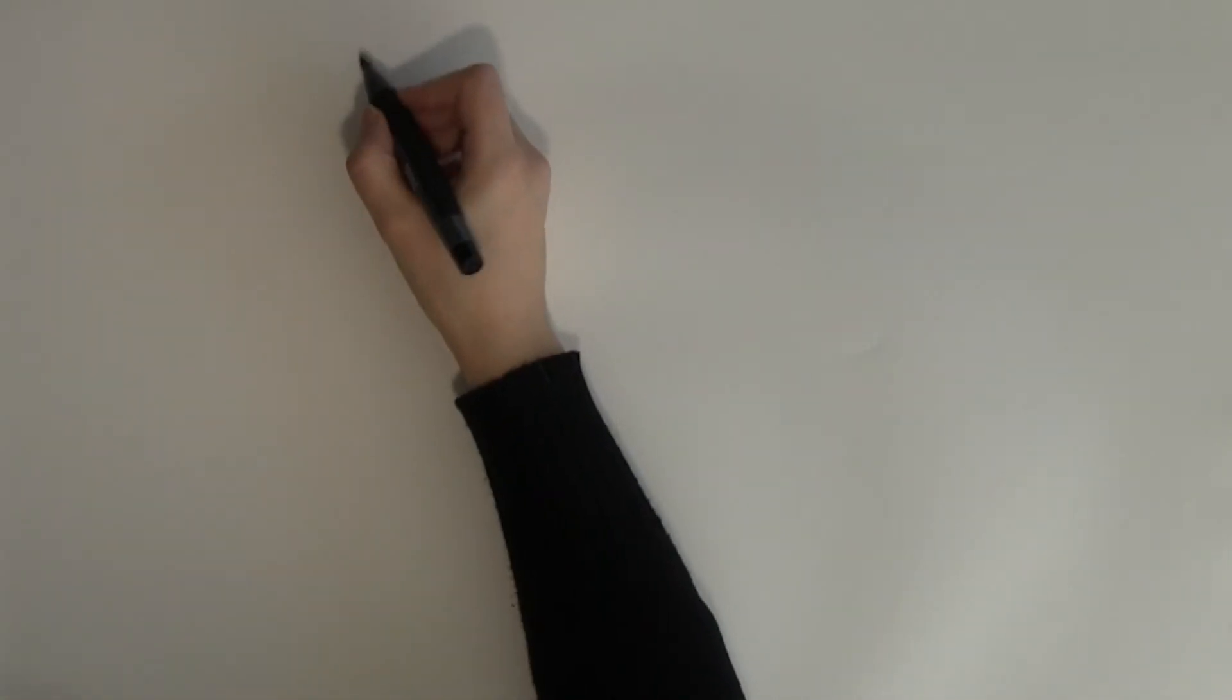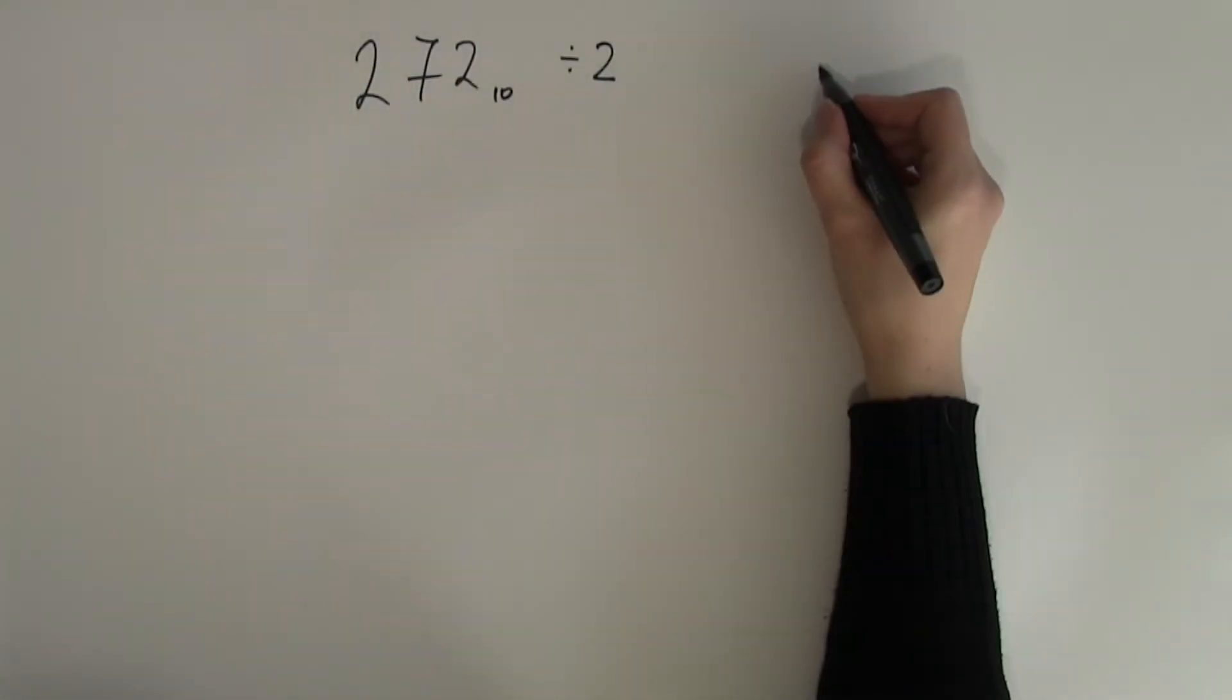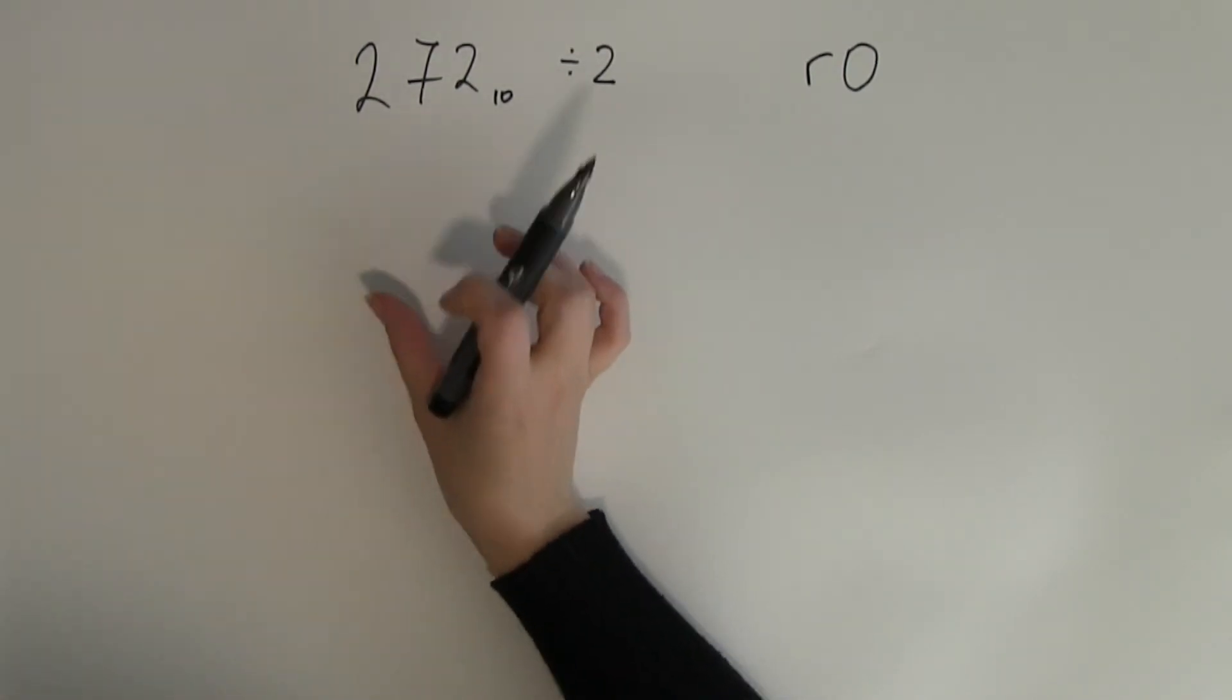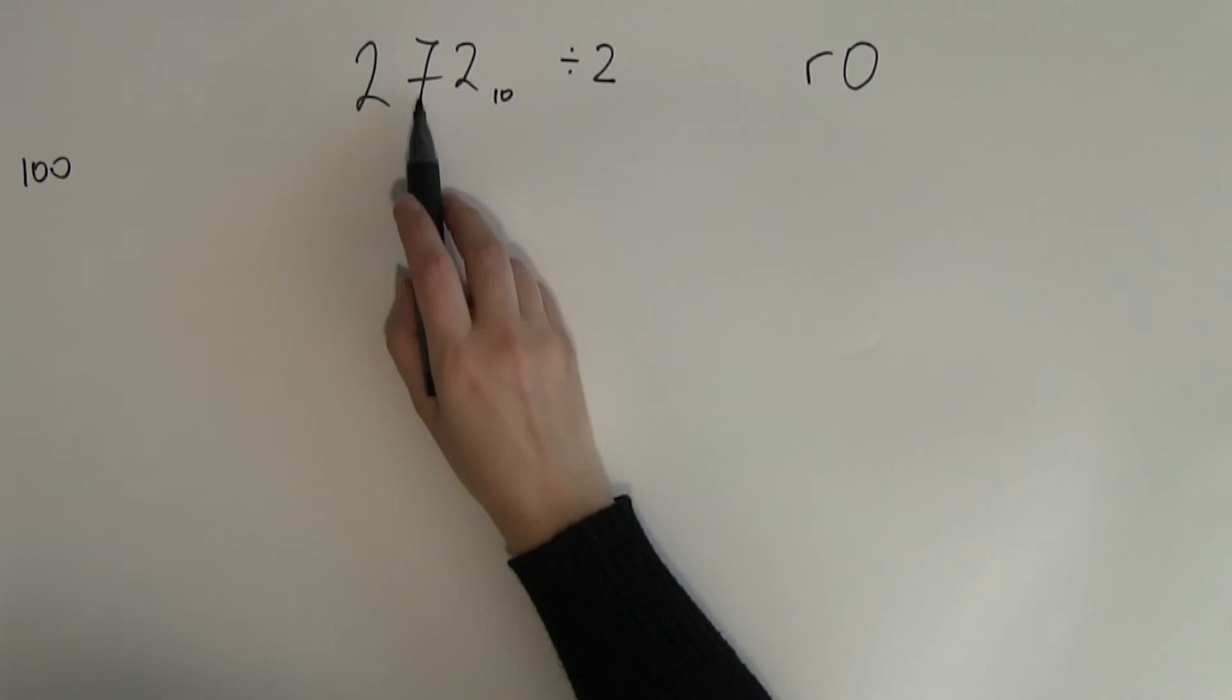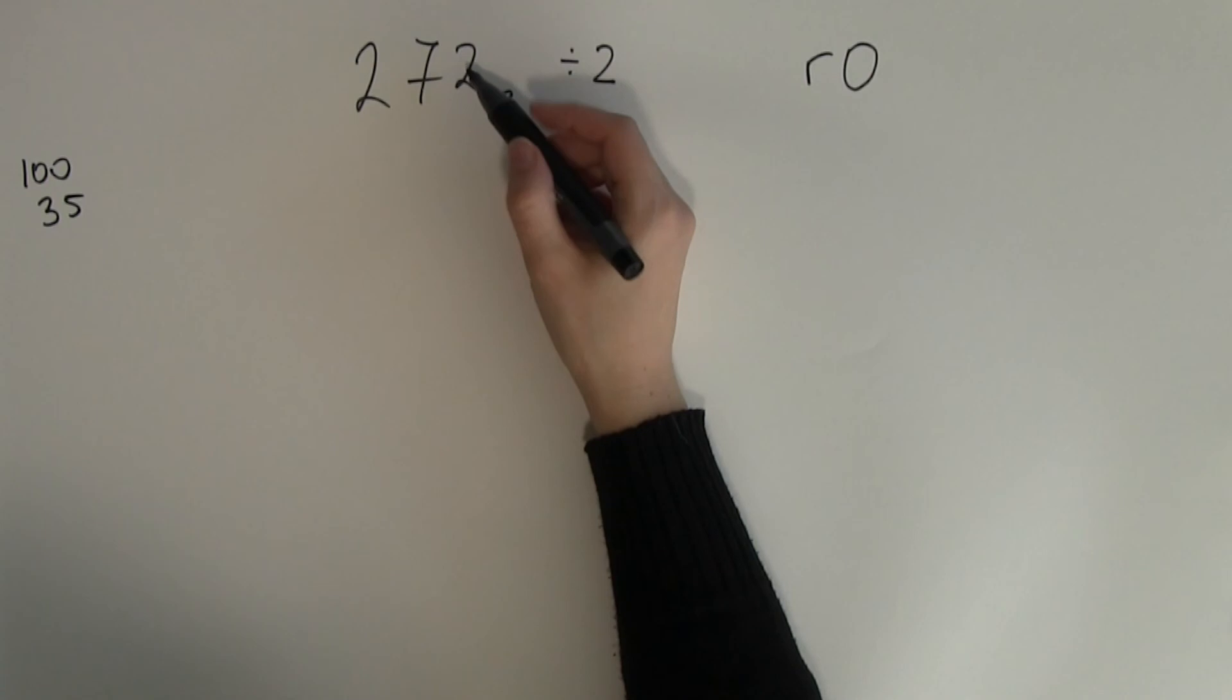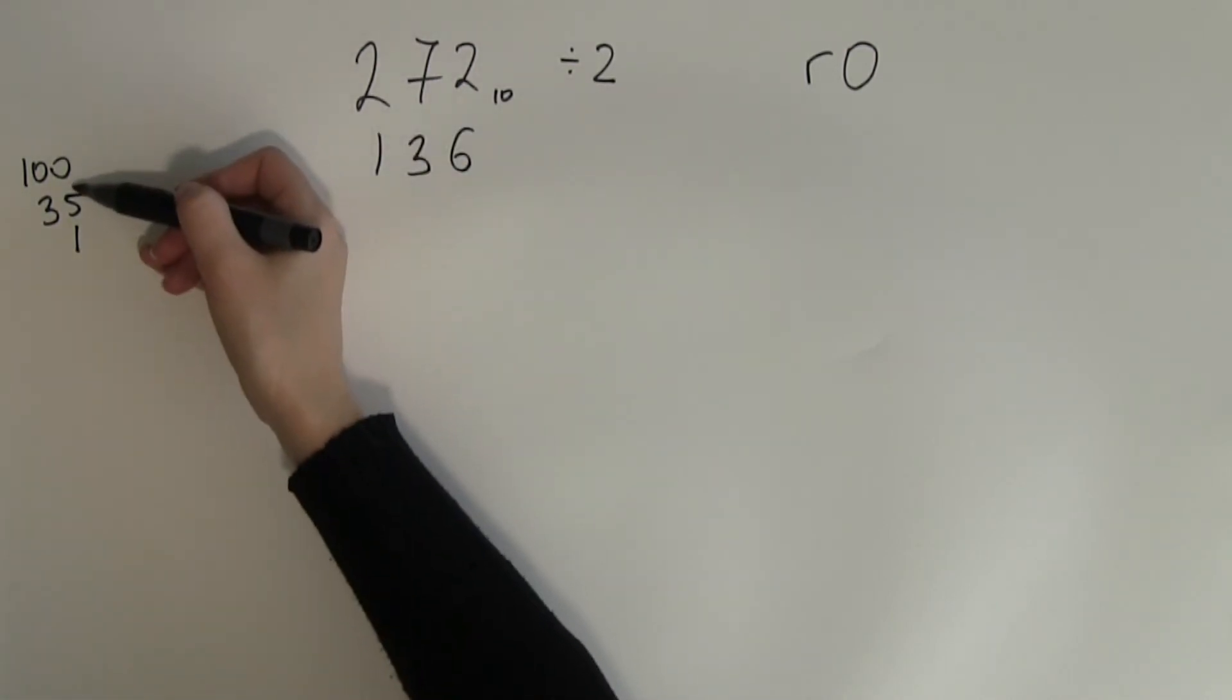The last example for using the division method to convert decimal to binary numbers will be 272. Now divide that by 2. I know this is an even number therefore my remainder will be 0. But 272 is quite a big number to half in my head. So what I'm going to do I'm going to partition it. So I'm going to half 200 first. Half of 200 is 100. Then I'm going to half 70. Half of 70 is 35. And I'm going to half 2. Half of 2 is 1. So the half of 272 is 136 which is the sum of all these halves.